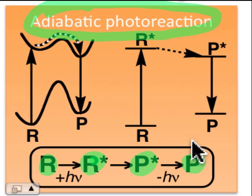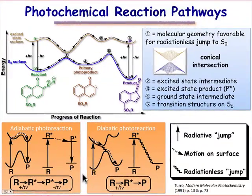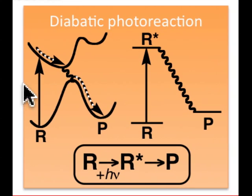This process, the adiabatic photoreaction, is what's responsible for most chemiluminescent processes. A more common photochemical process is what's known as the diabatic photoreaction, in which both the excited state potential energy surface and the ground state potential energy surface are involved. Here's how that happens.